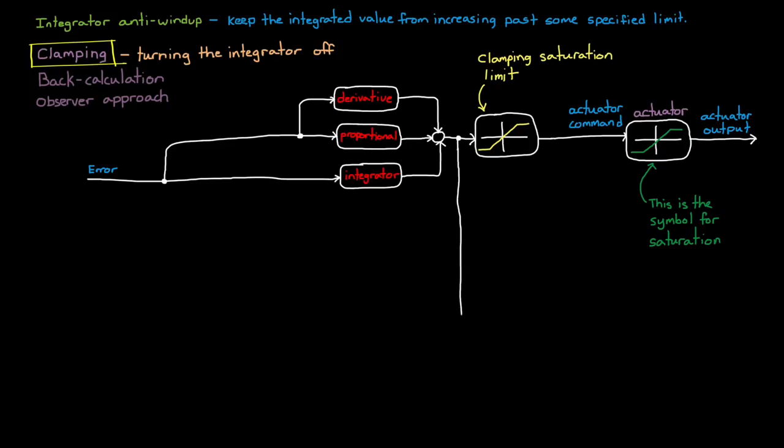The clamping method has two separate checks that it's doing. The first is to compare the output of the PID controller before and after the saturation check. If the values are equal, then no saturation took place, and this block outputs a zero. If they're not equal, then we are in saturation, and the block outputs a one.